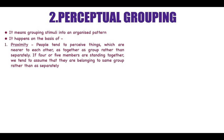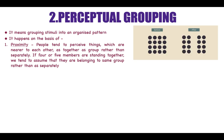Even people working in the same department or employees in a particular section are seen as a group — this is basically because of proximity. In these patterns, when you look at some dots and group them together, you are able to identify one set from another. This is basically how you organize information to interpret it differently.